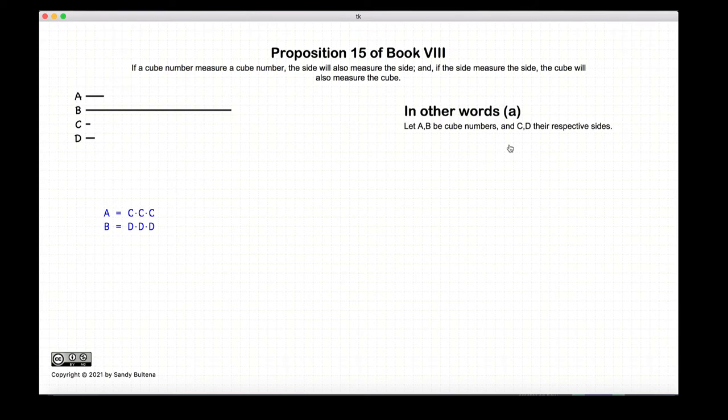Proposition 15 basically says if we have two cubed numbers, in other words a is c times c times c and b is d times d times d, and if a measures b then c also measures d. We also are saying in this proposition, again starting with two cubed numbers, that if c measures d then a measures b.